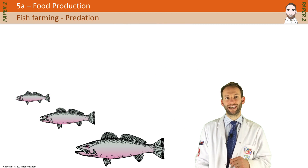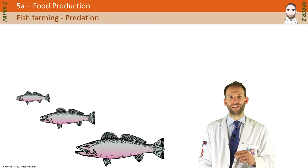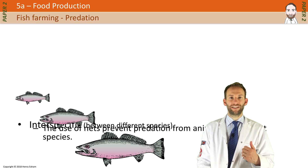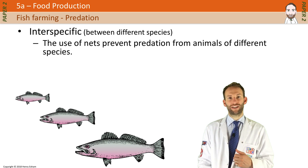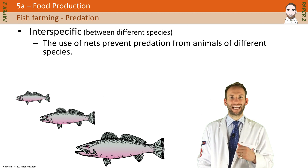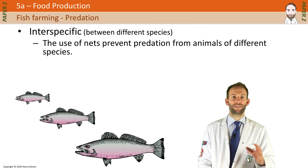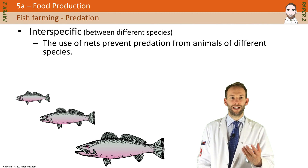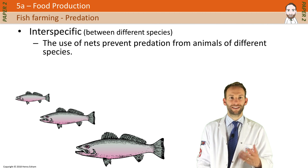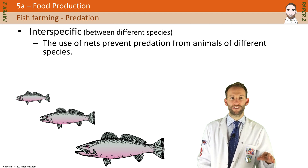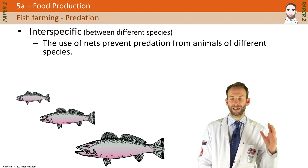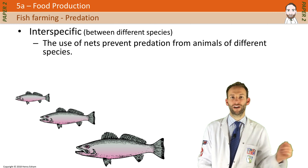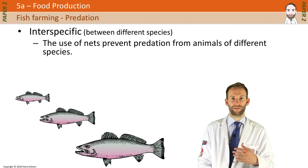There are two types of predation you've got to be careful of if you are farming fish. The first one is called interspecific predation. The use of nets prevents predation from animals of different species. If you're doing this in the sea, you want to keep nets over the top and around the fish so that there's no chance of other organisms getting in and eating them.